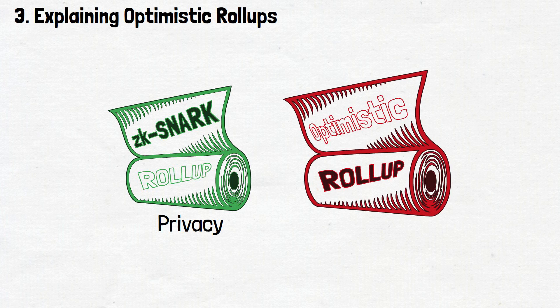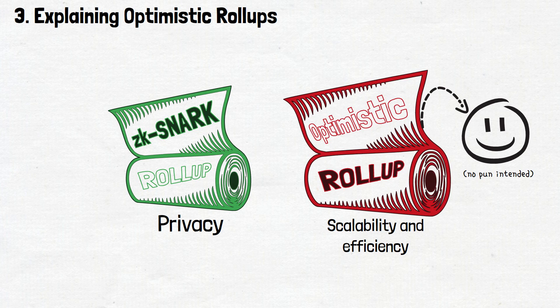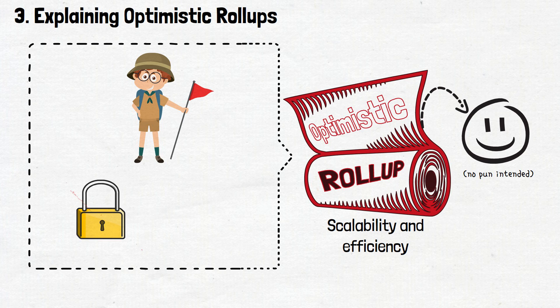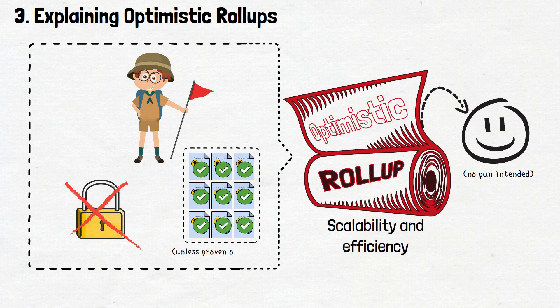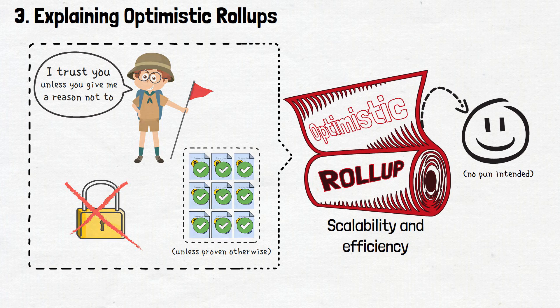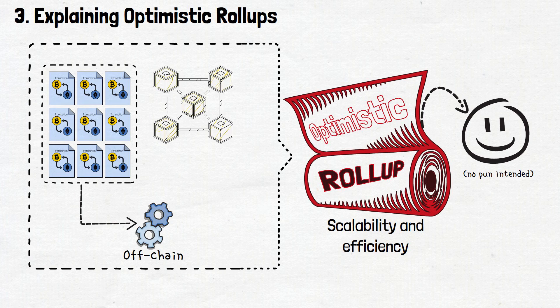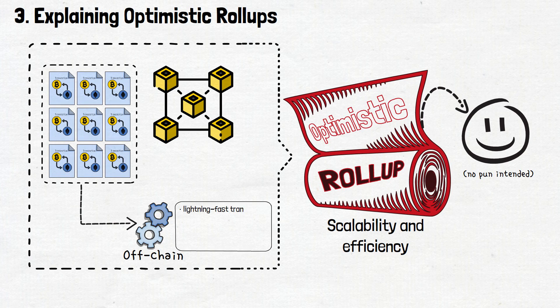Let's explore another player in the rollup game: the optimistic rollup. While ZKs focus on privacy, the optimistic rollup takes a different approach, aiming for scalability and efficiency with a touch of optimism. Think of optimistic rollups as the trustful adventurers of the crypto world. Instead of hiding transaction details like ZK snarks, they assume that all transactions within a bundle are valid unless proven otherwise — it's like saying, 'I trust you, unless you give me a reason not to.' When transactions are bundled up in an optimistic rollup, they are processed off-chain, away from the main network. This off-chain processing allows for lightning-fast transaction speeds and reduces congestion on the main chain.